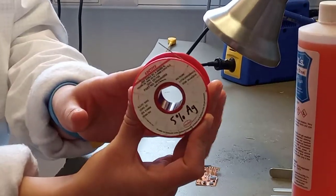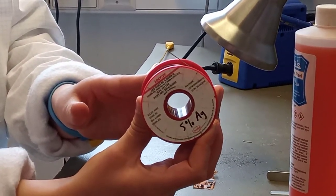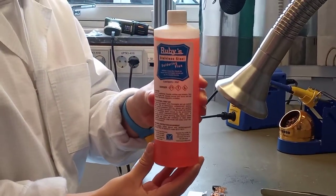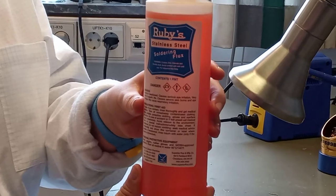For that we need to use solder with approximately 5% silver or some sort of silver concentration, and a stainless steel soldering flux.